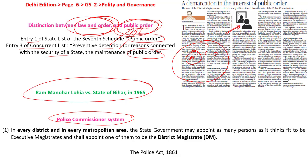Now we have to understand the police commissionerate system. Before that, we must understand the dual control of the police. When we look at Section 20 of the CRPC, it clearly says that in every district and every metropolitan area, the state government may appoint persons as executive magistrates and shall appoint one as the district magistrate. The district magistrate is usually from the IAS officers. Beneath him, there are sub-divisional magistrates and so on. We are speaking about the executive magistrate, not the judicial magistrate — so IAS officers and PCS service officers as well. This is defined under Section 20 of the CRPC.